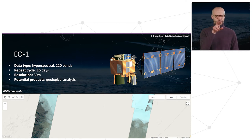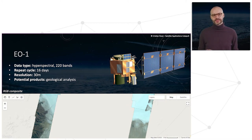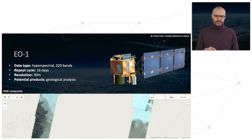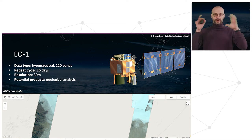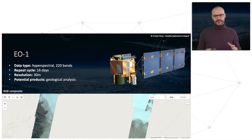One note: we can see only two strips in the imagery with no full coverage. This is because this mission doesn't provide full coverage of the Earth — it provides coverage only on selected areas.